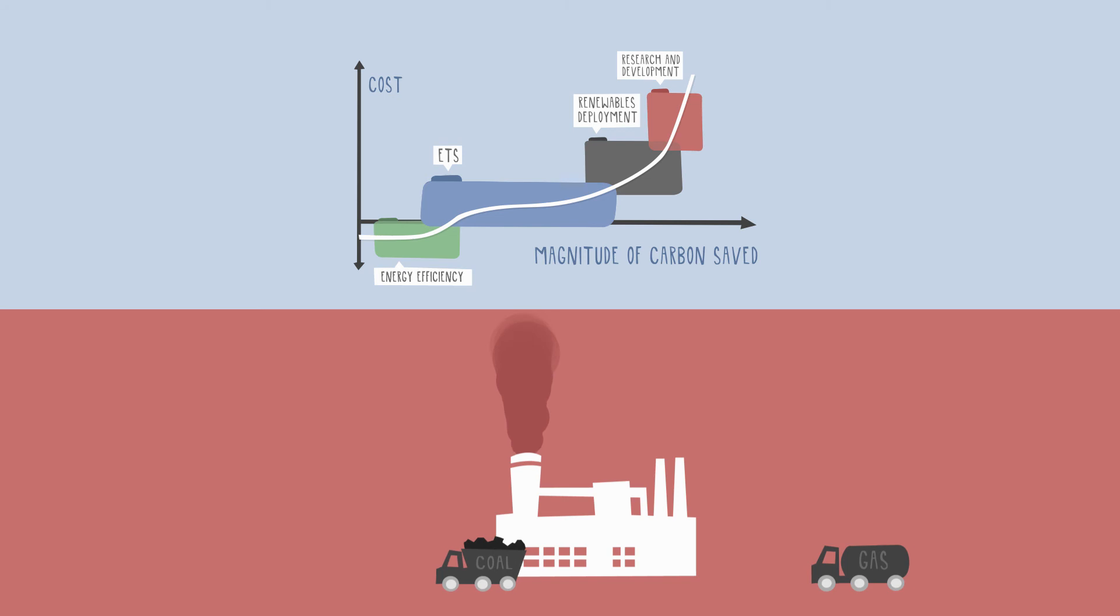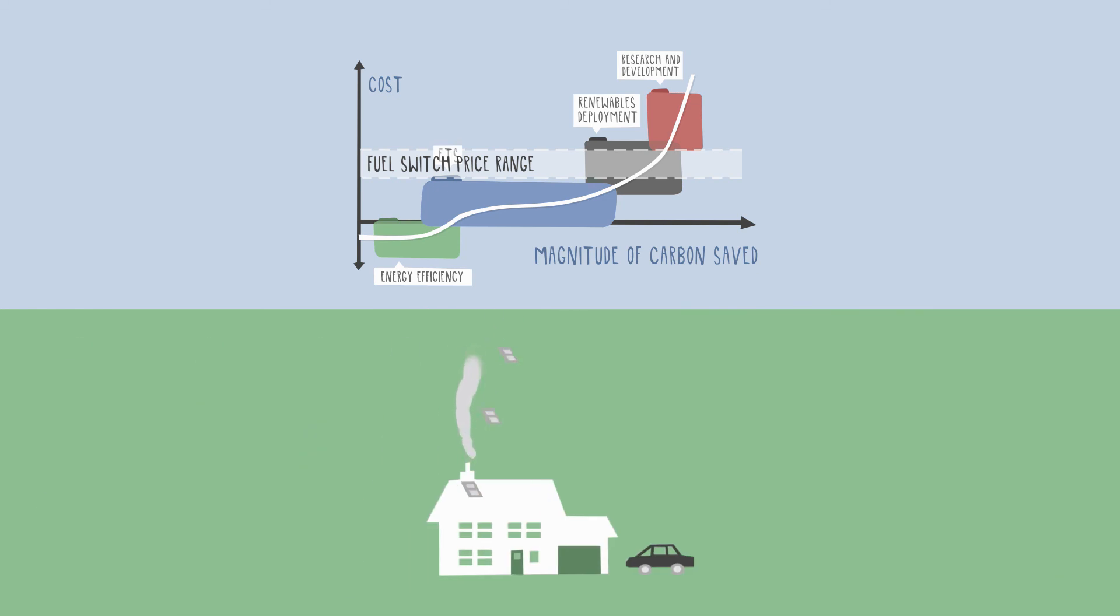For example, since 2010, the carbon price required to switch electricity generation from coal to gas increased 150%, while the levelized costs of residential solar PV decreased 50% over the same period.